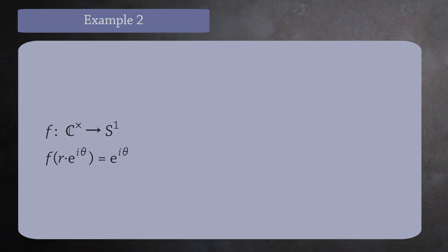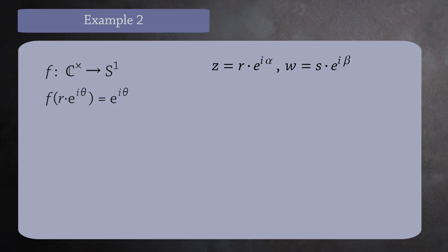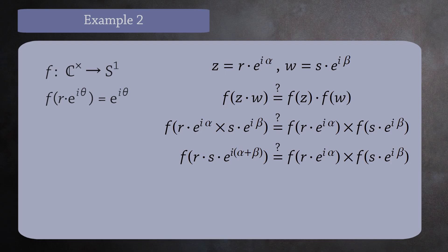Let's check. Let z equal r times e to the i alpha and w equal s times e to the i beta. We want to check that f of z times w equals f of z times f of w. To begin, substitute in the polar forms. Next, multiply the numbers on the left. Using the definition of the function f, we can see what each value maps to. This gives us e to the i alpha plus i beta equals e to the i alpha times e to the i beta. This is true by the rules of exponents, so this function is indeed a homomorphism.